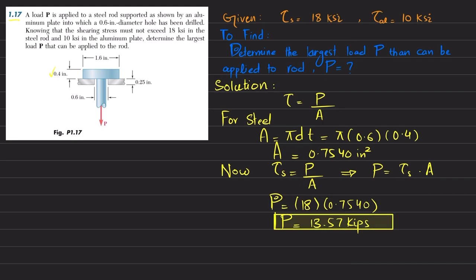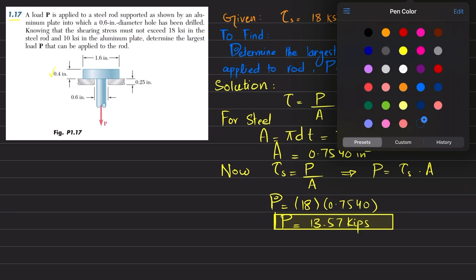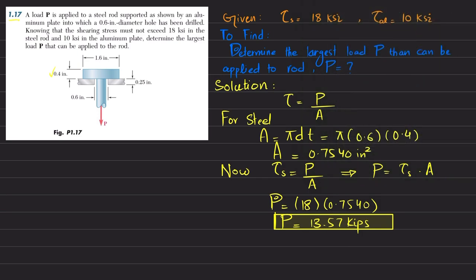Now we will do the same for aluminum. We know that shearing stress in aluminum is equal to shearing force per unit shearing area. For the aluminum plate support, the shearing area will be this one with diameter 1.6 and thickness of this plate is 0.25.